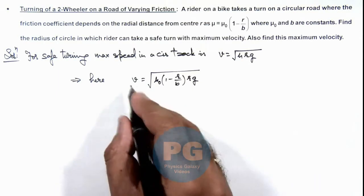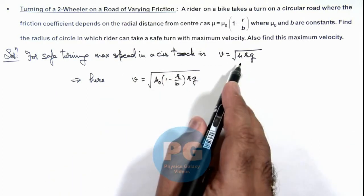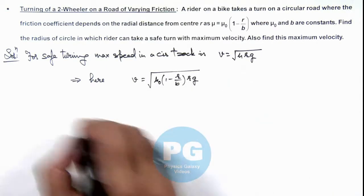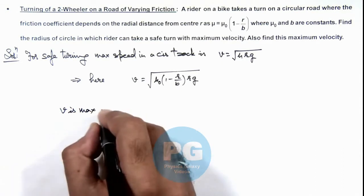So here we can see this maximum speed at which the rider can ride the bike depends on radius r. So we can write that v is maximum when